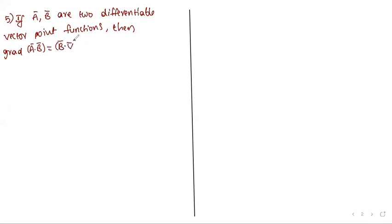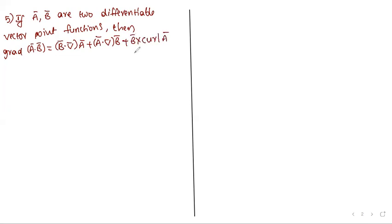Grad(Ā·B̄) equals B̄·(∇·Ā) plus Ā·(∇·B̄) plus B̄ cross curl(Ā) plus Ā cross curl(B̄).